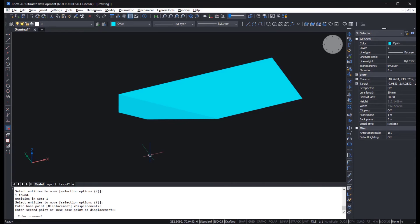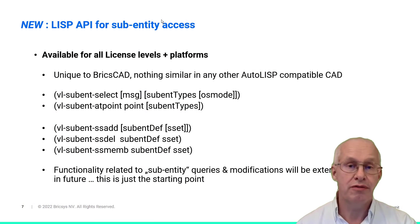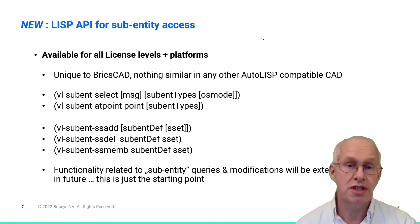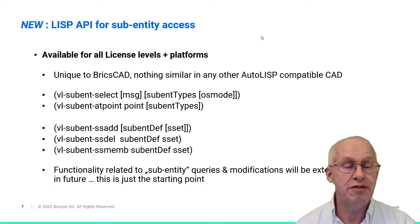Using this code, we can achieve results which were not possible before version 23. At this moment we provide just a starting point for the new sub-entity LISP functions family. There are already ideas to use this new functionality in relation to more geometric analysis and geometric operations during and after version 23. Of course, any feedback, wishes, and ideas are welcome.